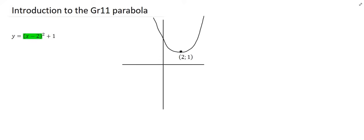Here we can see a rough sketch of what that parabola would look like. From the (x minus 2) part, it's a horizontal shift — the new grade 11 feature. x minus 2 means it's actually going to go two places to the right. Remember the turning point started at (0, 0), so it's moved two places to the right, and then the plus one moves it upwards. So this is the new turning point.